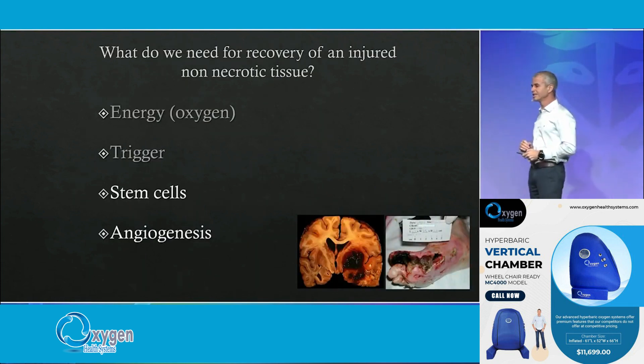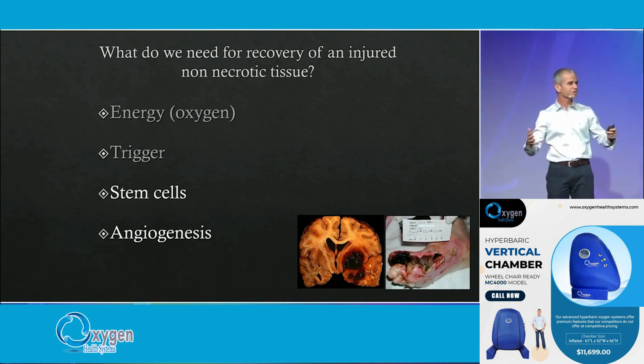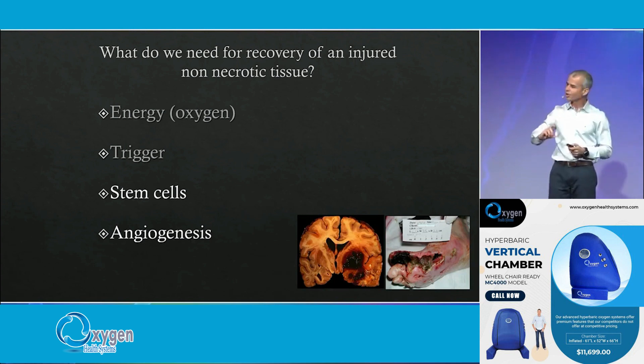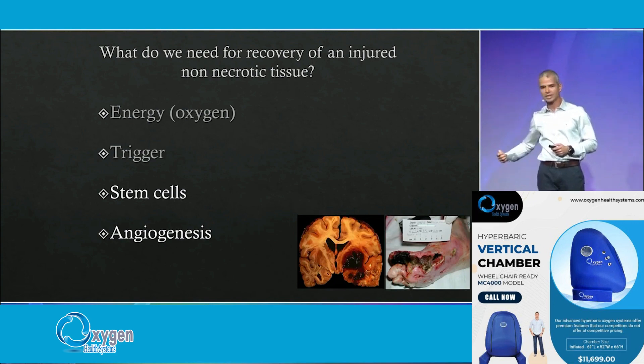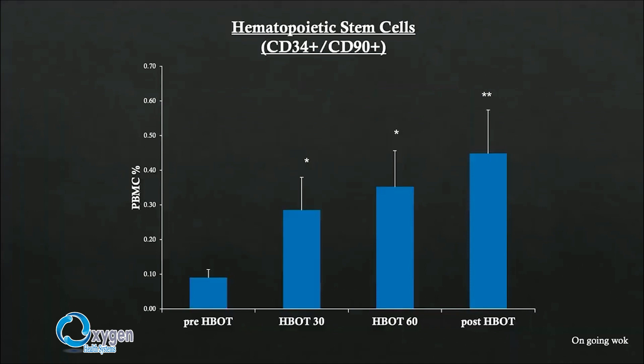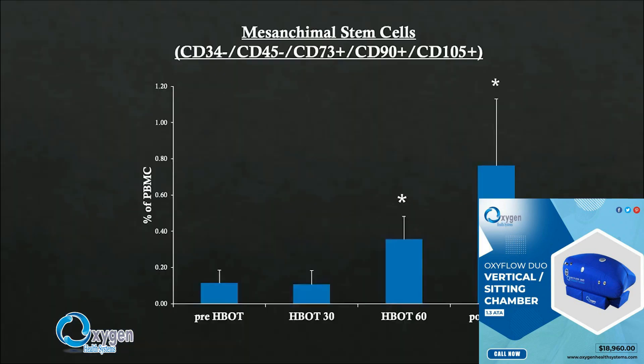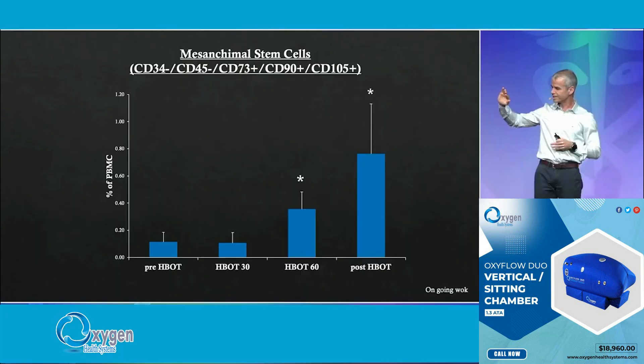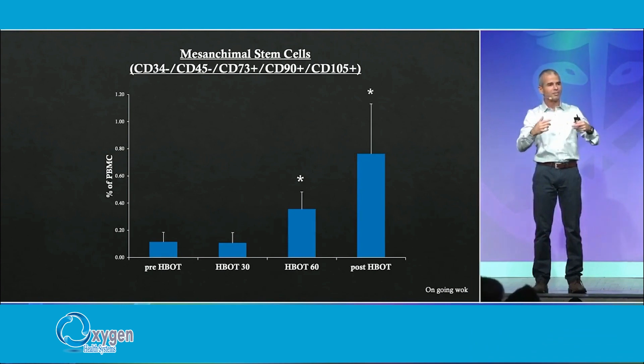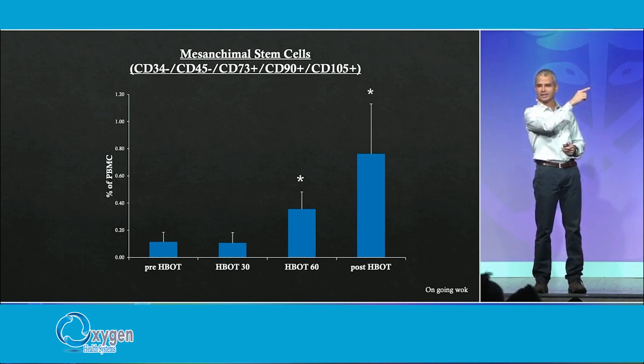Another thing we need is stem cells. Instead of taking them out and injecting them in, we thought about stimulating the body to do the proliferation of stem cells itself — again using the oxygen fluctuation: high oxygen, then a fast decline back to normal. We can see a dramatic increase in hematopoietic stem cells measured in blood samples. But more excitingly, for the first time we can see that we can also trigger the proliferation of mesenchymal stem cells in humans — the cells we have in the tissue — and make them proliferate to such an amount that we can actually detect them in the blood.